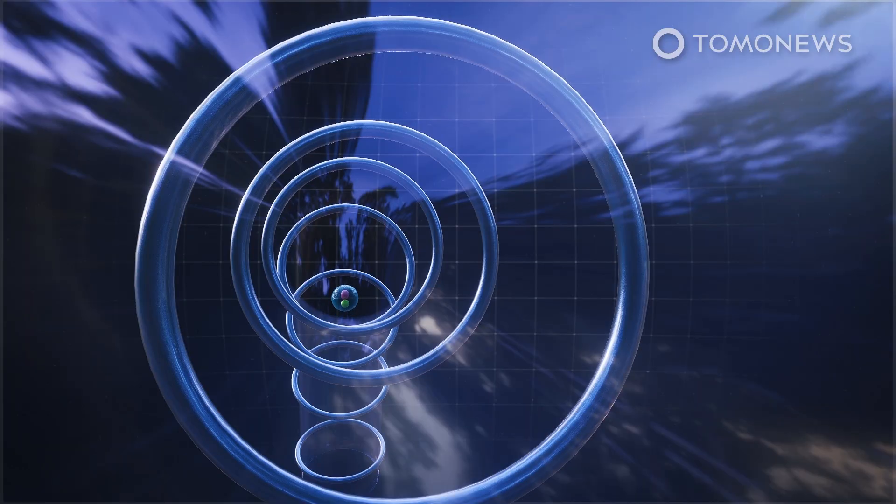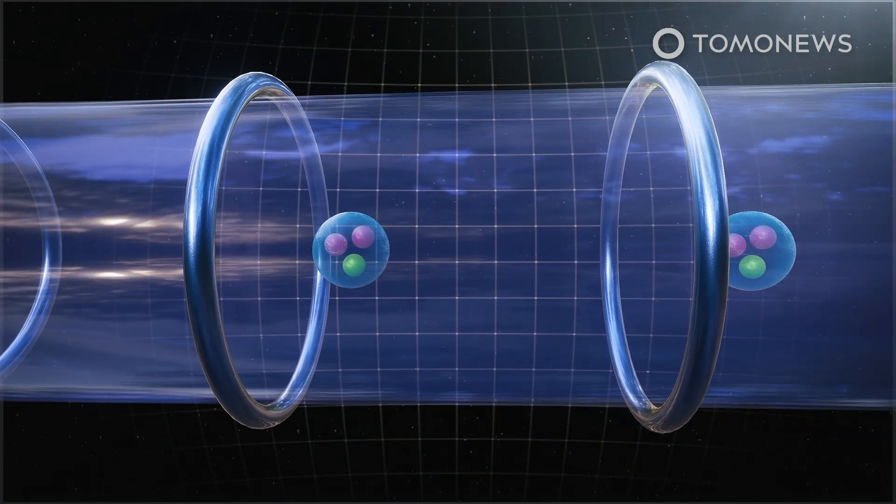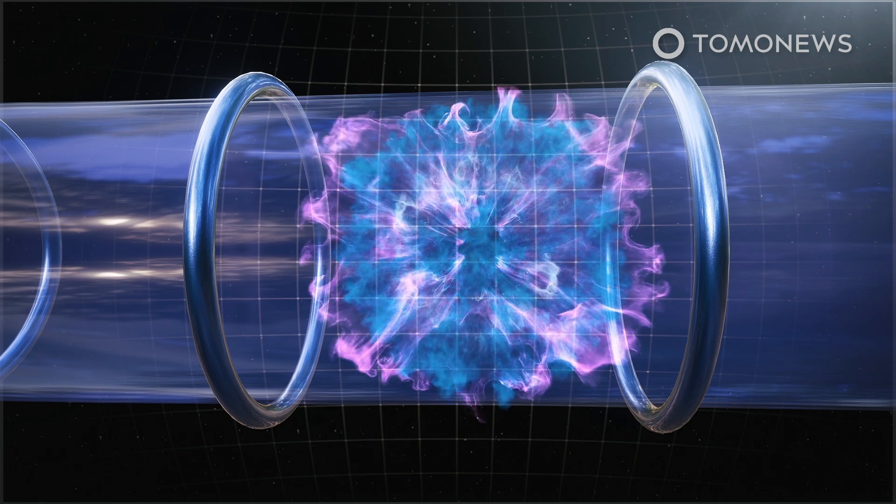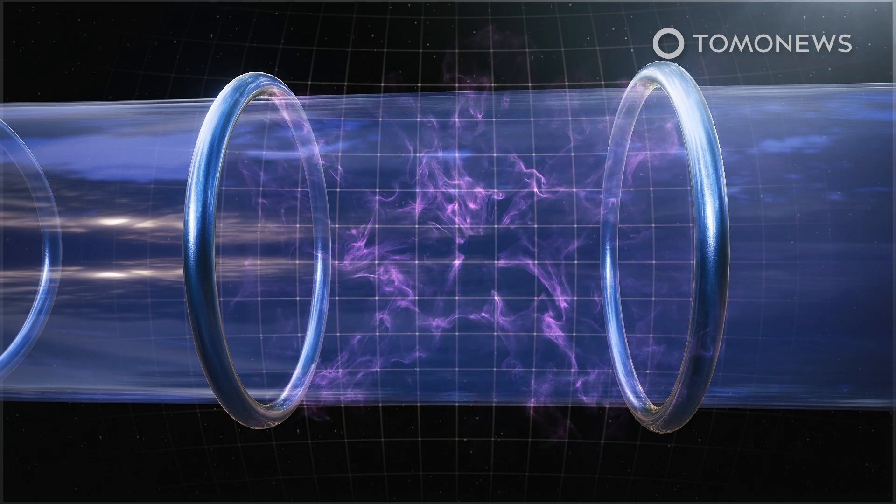In 2012, scientists working at the CERN Particle Physics Laboratory near Geneva, Switzerland, proved the existence of the Higgs boson particle within the Higgs field, describing it on CERN's website as the visible manifestation of the Higgs field, rather like a wave at the surface of the sea.